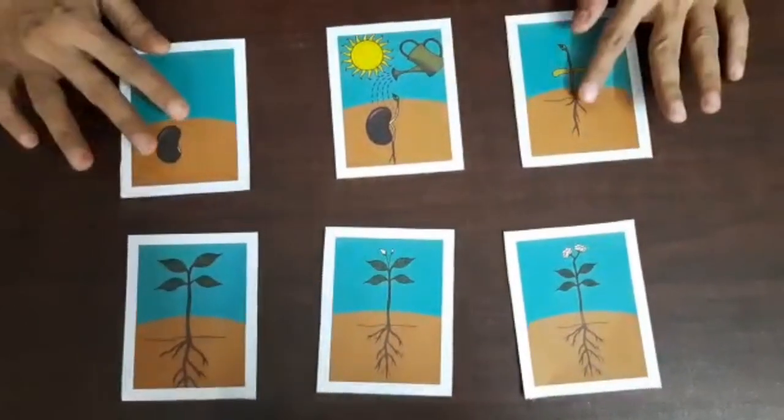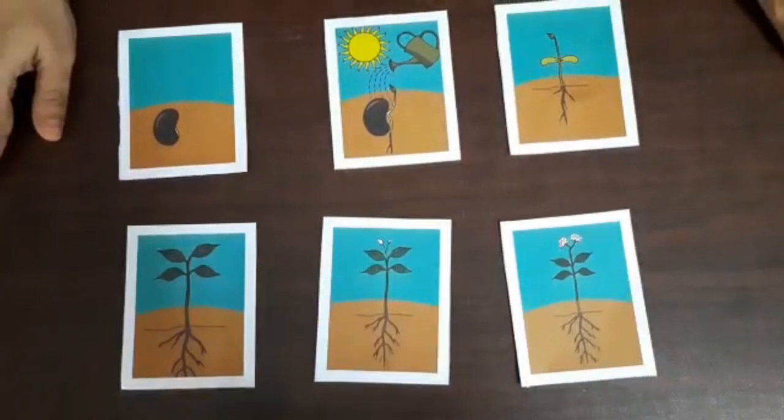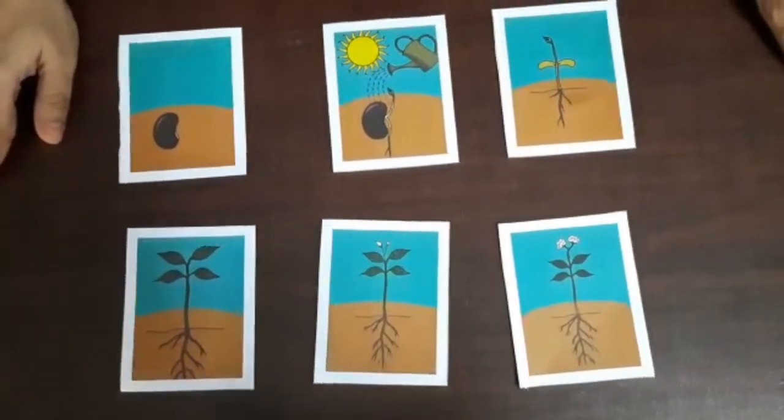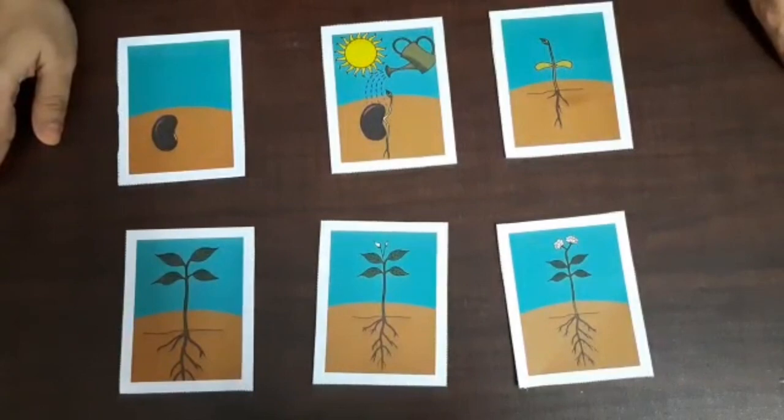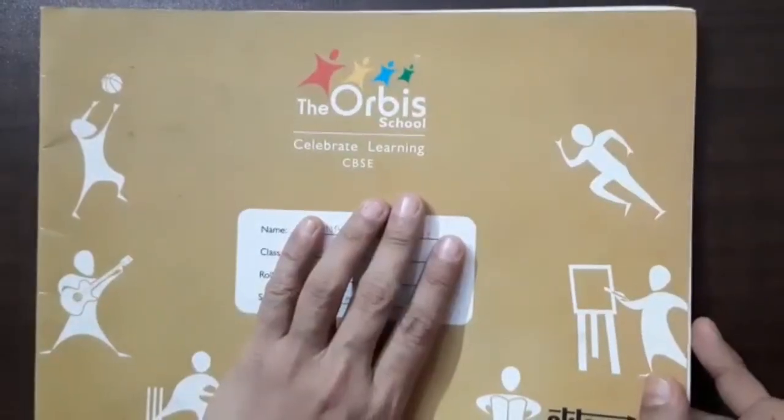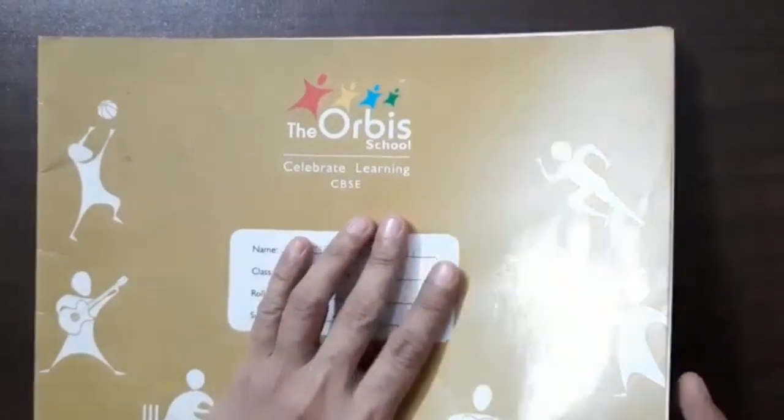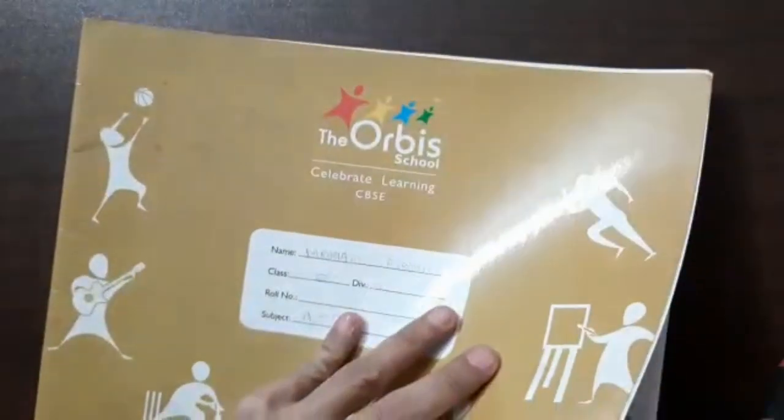So children, these are the different stages of growth of a plant. This is also called germination, the germination process of plants. Children, let's open our D file. Here we will take a page.